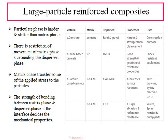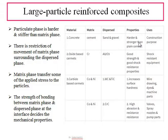Some examples of large particle reinforced composites: the first example is concrete, where the matrix phase is cement and the dispersed phase consists of particles like sand. This composite is used for construction purposes and is harder and stronger than plain cement alone.